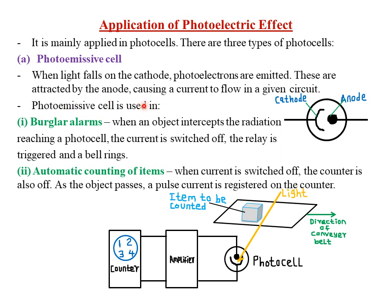Photoemissive cells are used in burglar alarms. When an object intercepts the radiation reaching the photocell, the current is switched off, the relay is triggered, and a bell rings. For example, installed on a gate: when an intruder enters, they block the light reaching the cathode, photoelectrons are not emitted, current is cut off, and the external circuit is switched off.